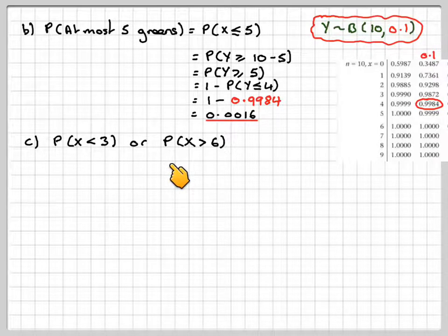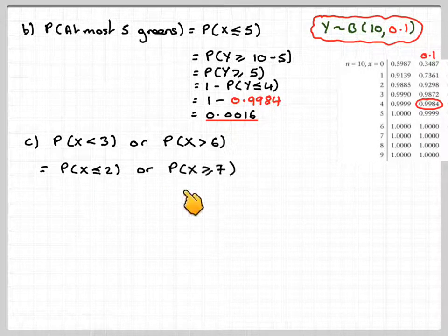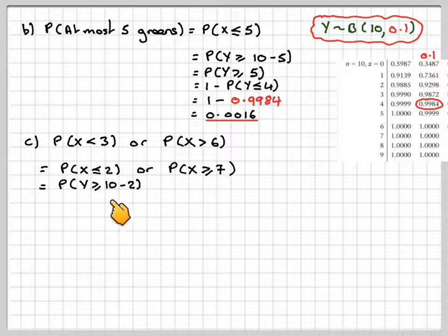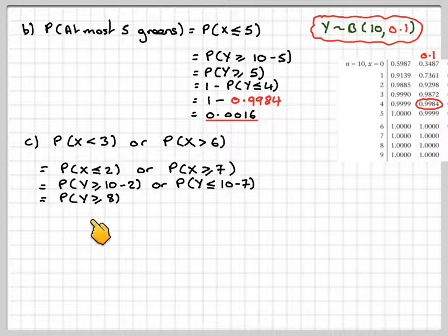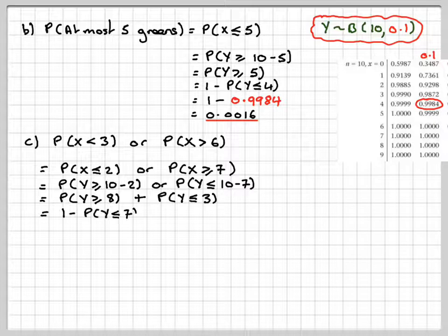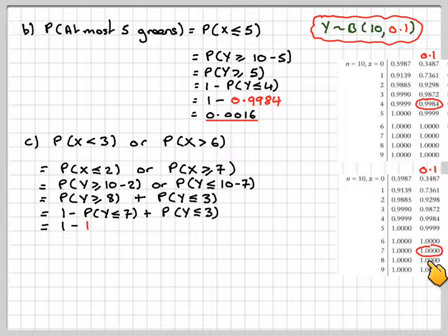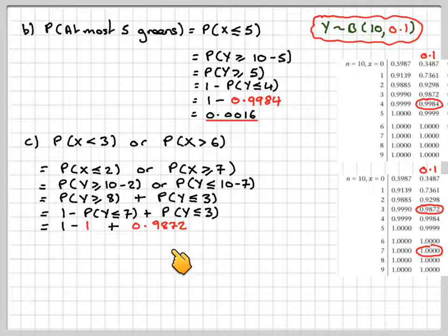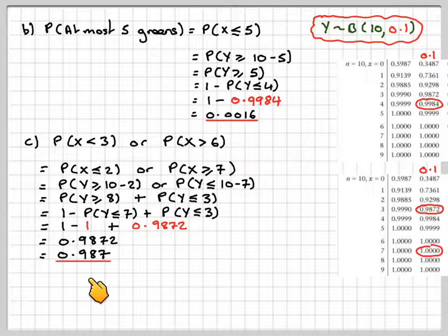For part c, the probability that X is less than 3 or X is greater than 6. Writing these as the probability of X less than or equal to 2 or X greater than or equal to 7, and changing the inequality signs for the complementary gives Y greater than or equal to 10 minus 2, or Y less than or equal to 10 minus 7. That's the probability that Y is greater than or equal to 8 or Y is less than or equal to 3. This becomes 1 minus the probability of Y less than or equal to 7, which is 1, plus the probability of Y less than or equal to 3, which is 0.9872. This gives an answer of 0.9872, which rounded becomes 0.987.